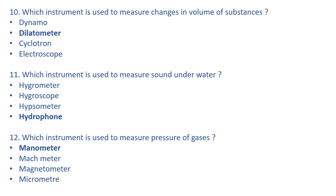Dynamo is used to convert mechanical energy into electrical energy. Cyclotron is a type of charged particle accelerator which can accelerate charged particles to higher energies. Electroscope is an instrument used to detect the presence of electric charge. Let's come to the next one.